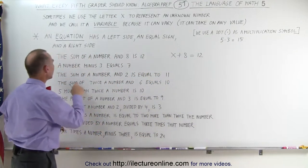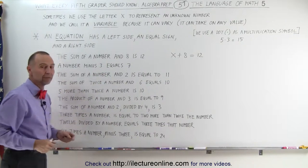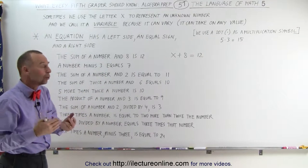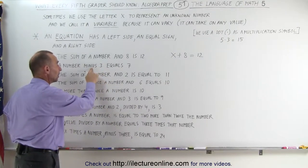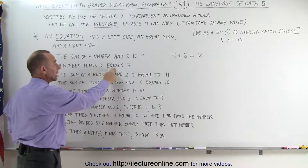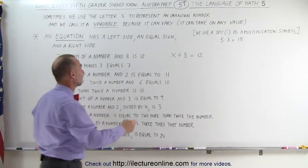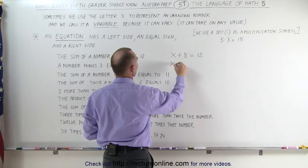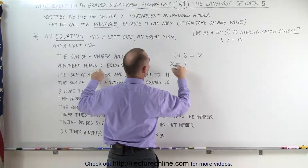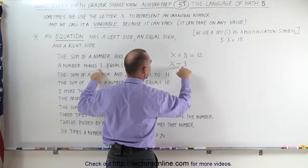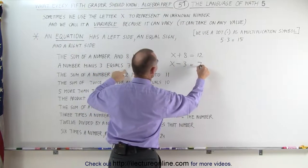The next sentence says: a number minus 3 equals 7. We take an unknown number and we subtract 3 from it — 'minus' means subtraction, 'equals' means the equal sign. So we take the unknown number, subtract 3 from that: x minus 3 equals 7.